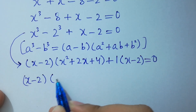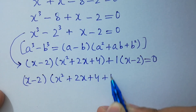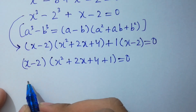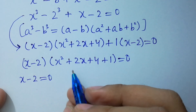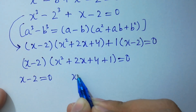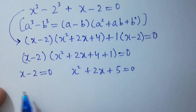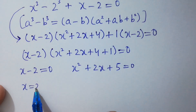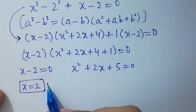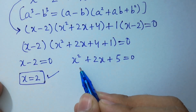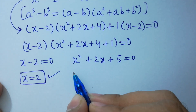We have (x minus 2)(x squared plus 2x plus 4 plus 1) equals 0, so (x minus 2)(x squared plus 2x plus 5) equals 0. Therefore x minus 2 equals 0, giving our real solution x equals 2, or x squared plus 2x plus 5 equals 0, which is our quadratic equation.